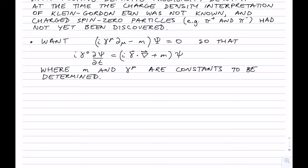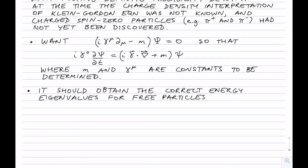The other thing we want is for this equation to contain the correct energy eigenvalues for free particles, which we know from relativity: E squared equals p squared plus m squared. So we take the equation we want, i gamma^mu d_mu minus m times psi equals zero.